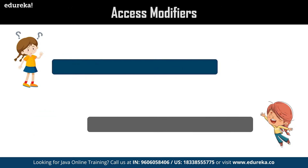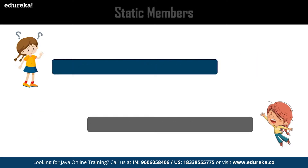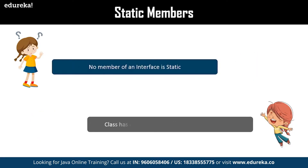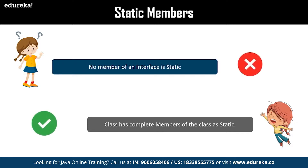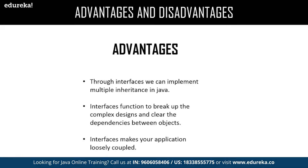The next difference is access modifiers — interfaces do not have access modifiers; by default interfaces take public as their access modifier, whereas classes provide private access modifiers which are not available in interface. The next one is static members — interface cannot have any static members, whereas a class has all its members as static.